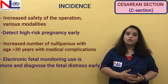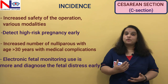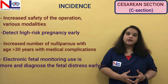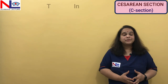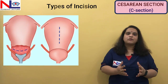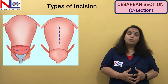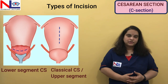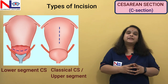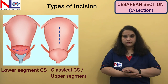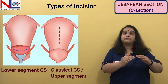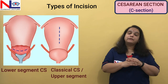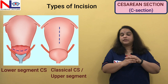Here we will discuss what are the indications which are common to perform this procedure and what types of C-section there are. There are basically two types, though others exist as well. We will discuss only two: the lower segment caesarean section and the classical or upper segment caesarean section. The type basically depends on the incision which we are giving on the uterus.